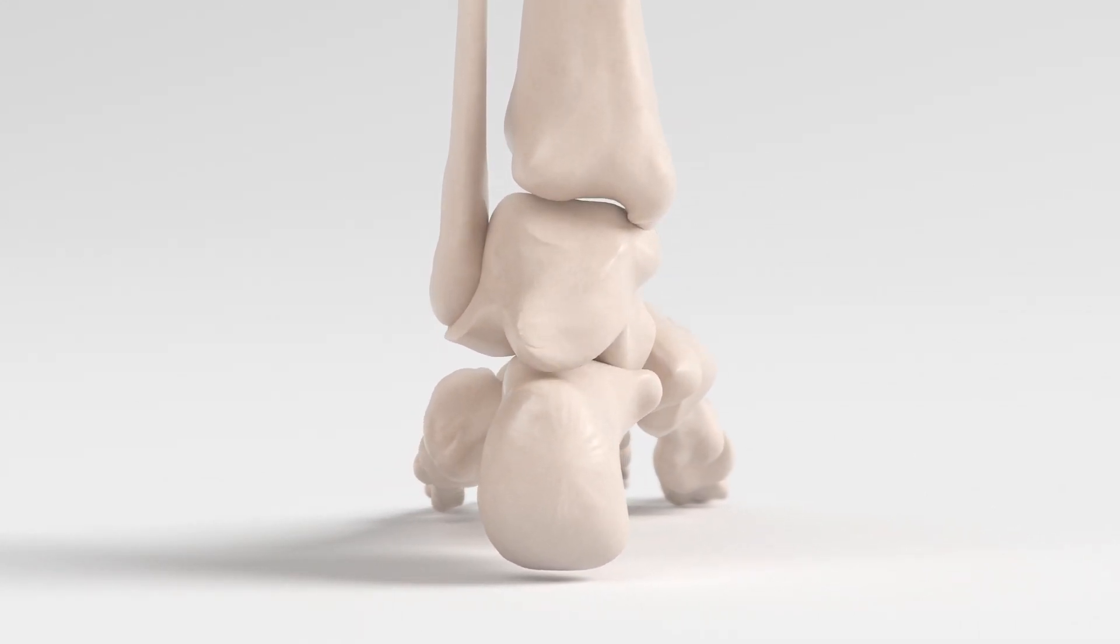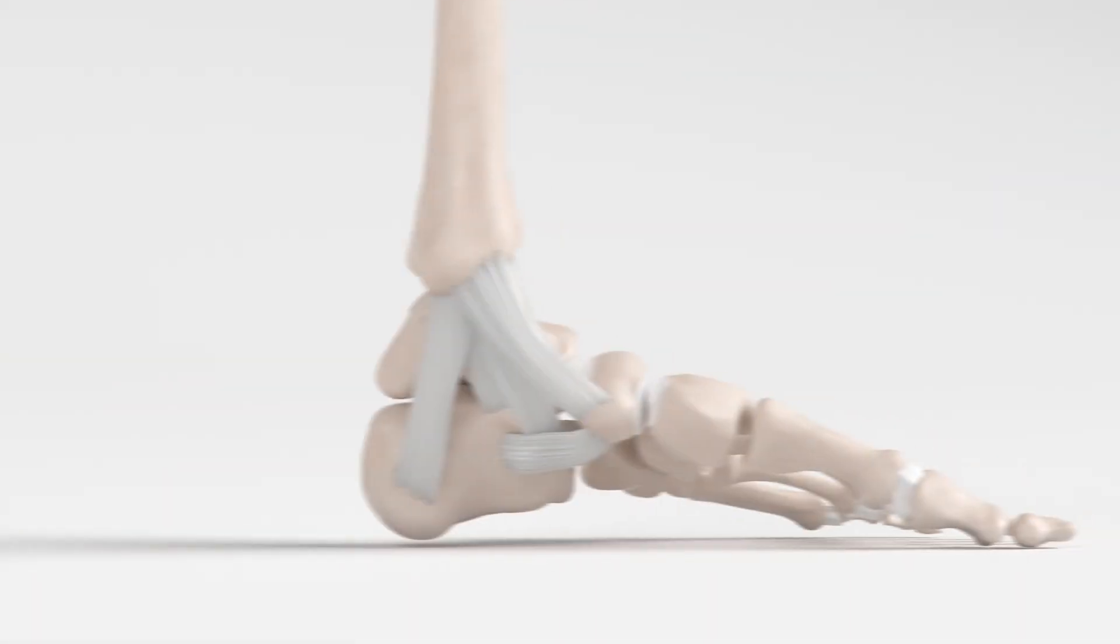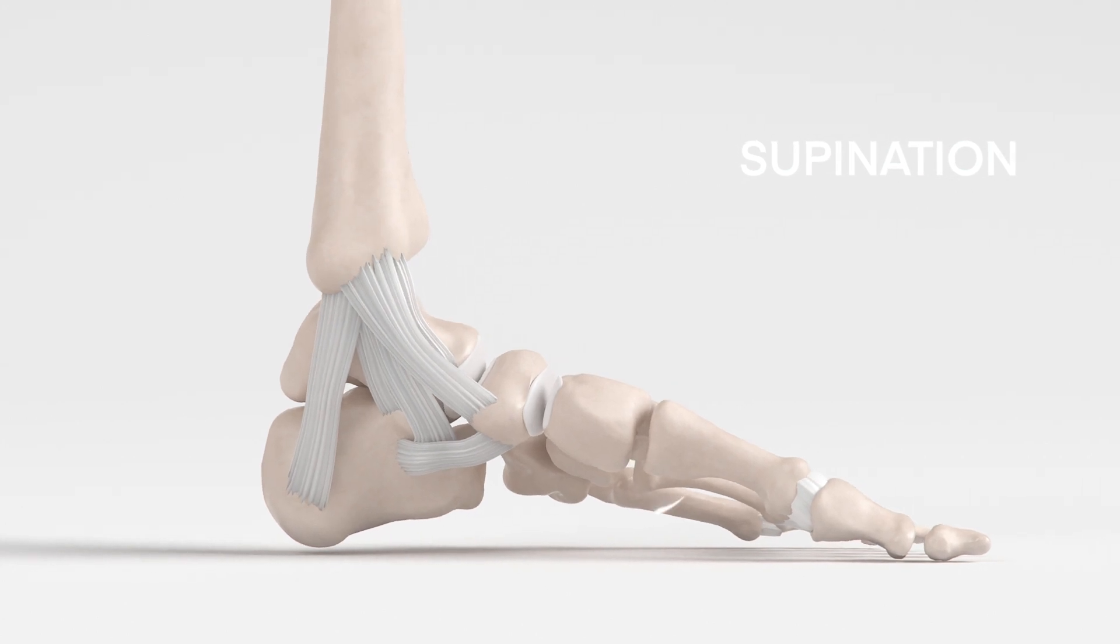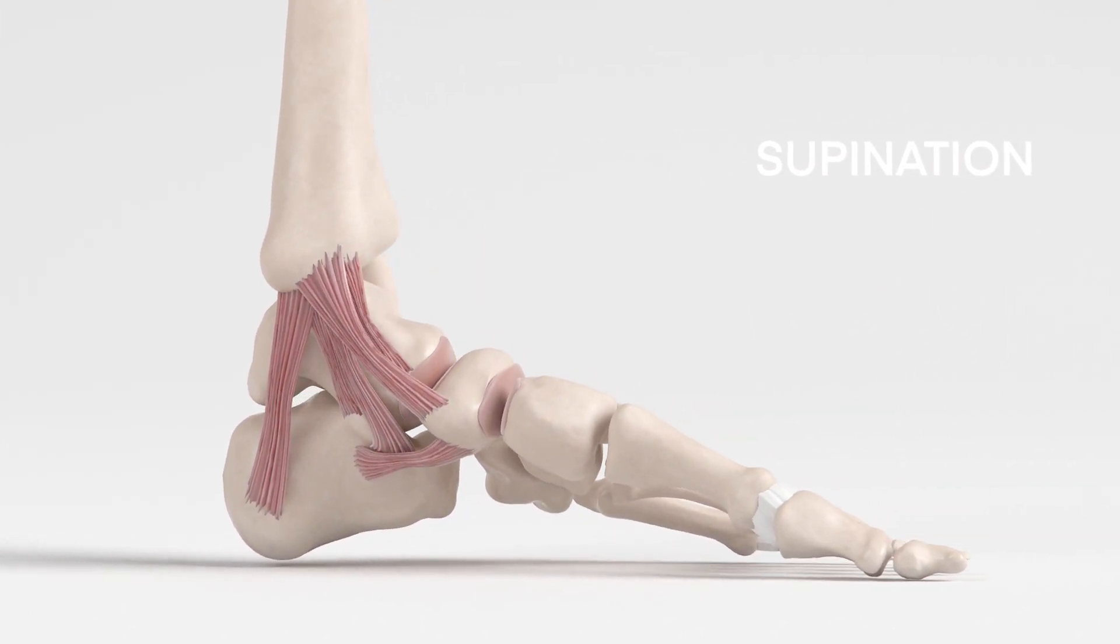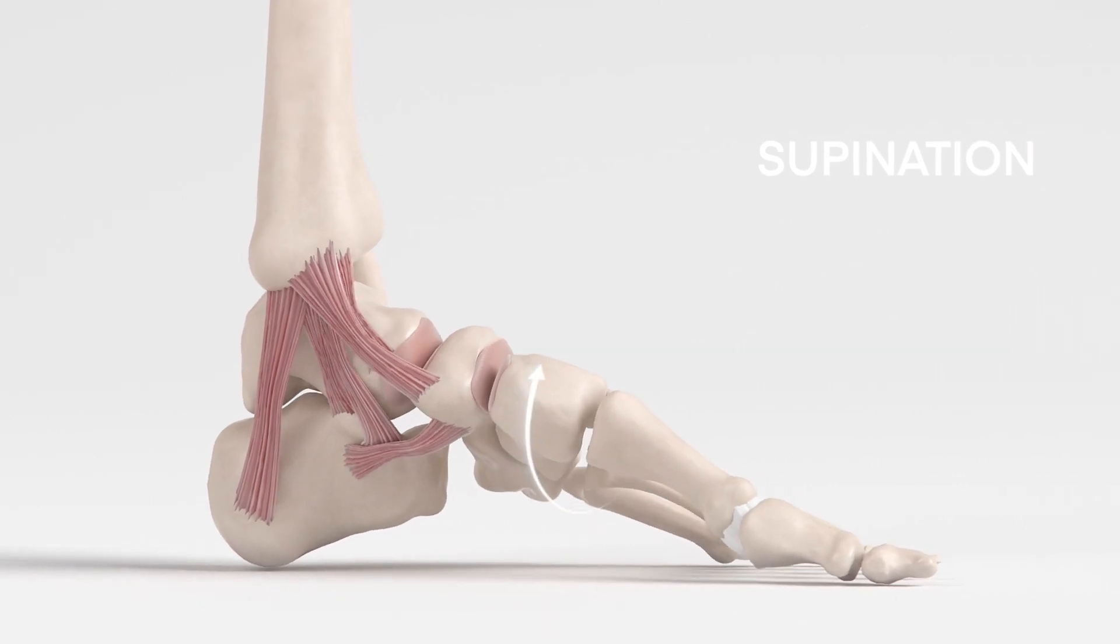When muscles are not controlling movement properly, they stretch and do not return to their original shape. Ultimately, the ligaments stretch until they become permanently deformed. At that point, the foot structurally collapses, leading to bone-on-bone osteoarthritis.